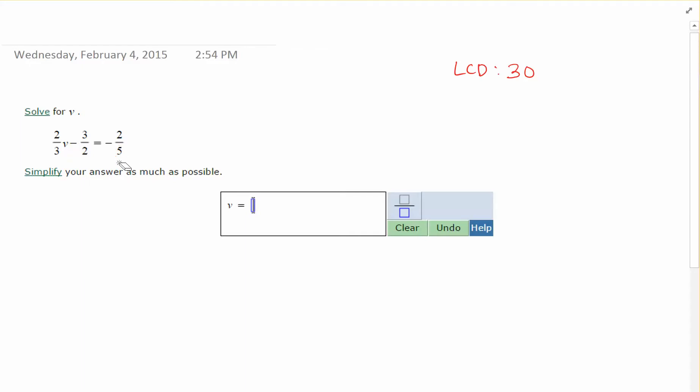After you find the least common denominator, you're going to multiply both sides of the equation by 30. When you do this, you end up having to distribute the 30 to every term. So everything gets the 30.